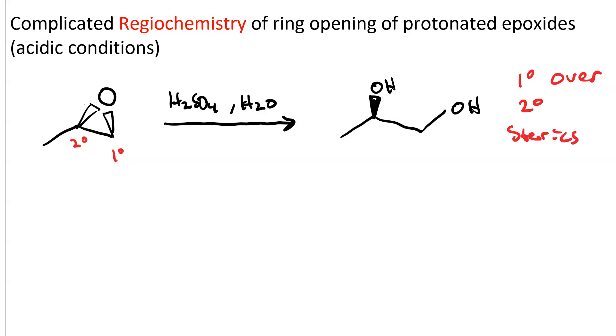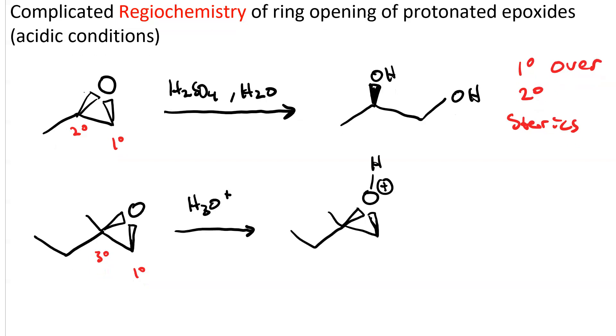It's different if we have a tertiary ring carbon. Here, sterics is going to lose. Once the epoxide is protonated, there's a resonance structure that has the ring open with a tertiary carbocation, and that's more stable than the resonance structure that would have the ring open with the primary carbocation or a secondary carbocation for that matter.